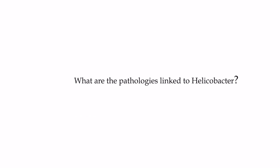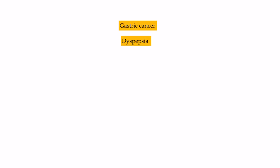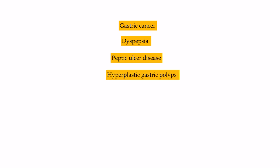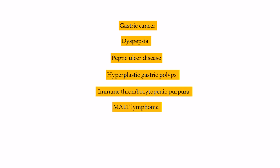What are the pathologies linked to Helicobacter? Helicobacter pylori causes gastric cancer, dyspepsia, peptic ulcer disease (both duodenal and gastric), hyperplastic gastric polyps, immune thrombocytopenic purpura, and MALT lymphoma. MALT lymphoma, once diagnosed, is treated with anti-H. pylori treatment. Another species, Helicobacter bilis, is linked with gallbladder cancer.